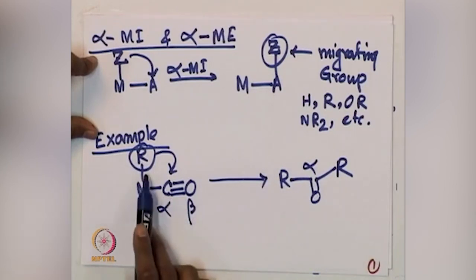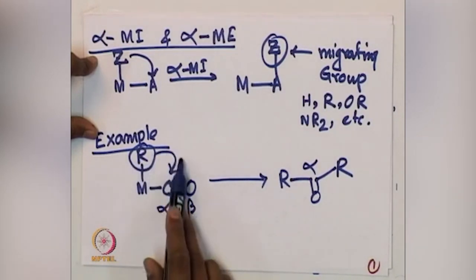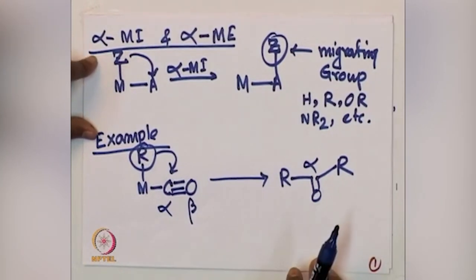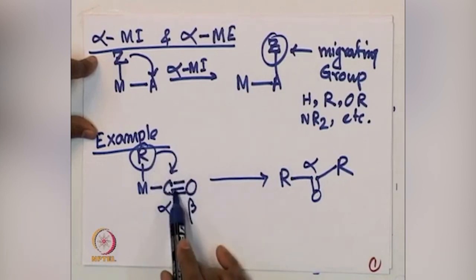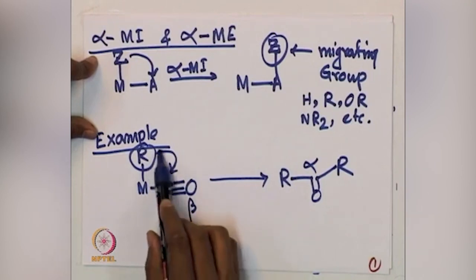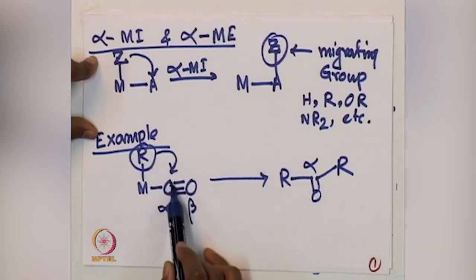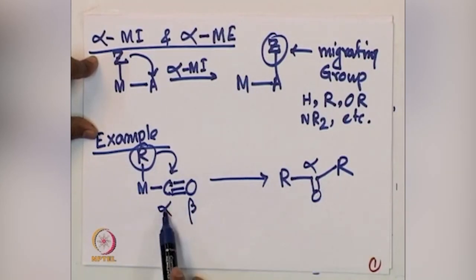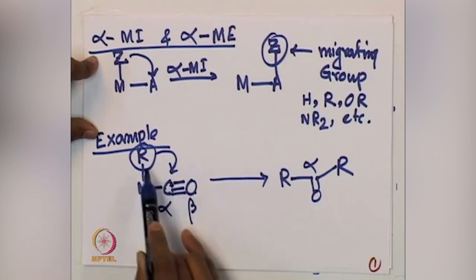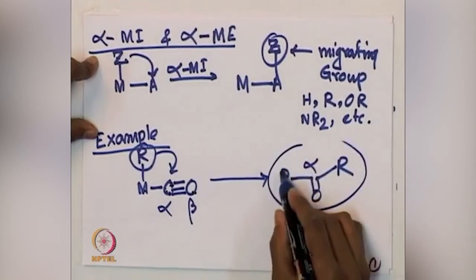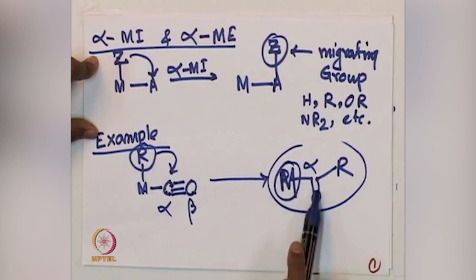One can argue whether it is insertion into the M-R bond or migration of R. R can migrate, or CO can insert — both migration and insertion give you the same product. With a very elegant example done by researchers, we will discuss why it is a migration of R and not an insertion of CO. The alpha carbon is directly coordinated with the metal, and the R group migrates on the alpha position, giving the M-C(O)-R species.